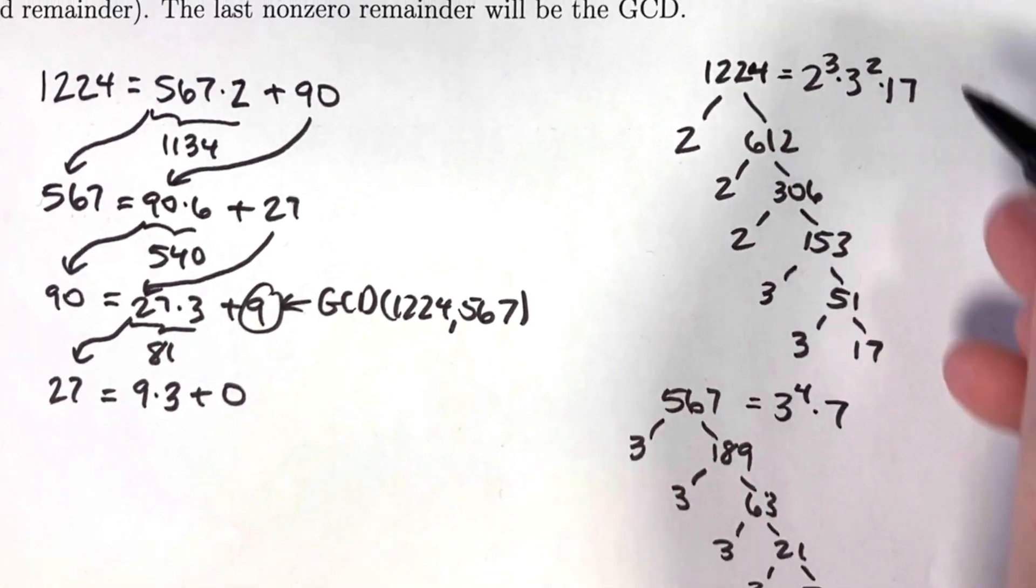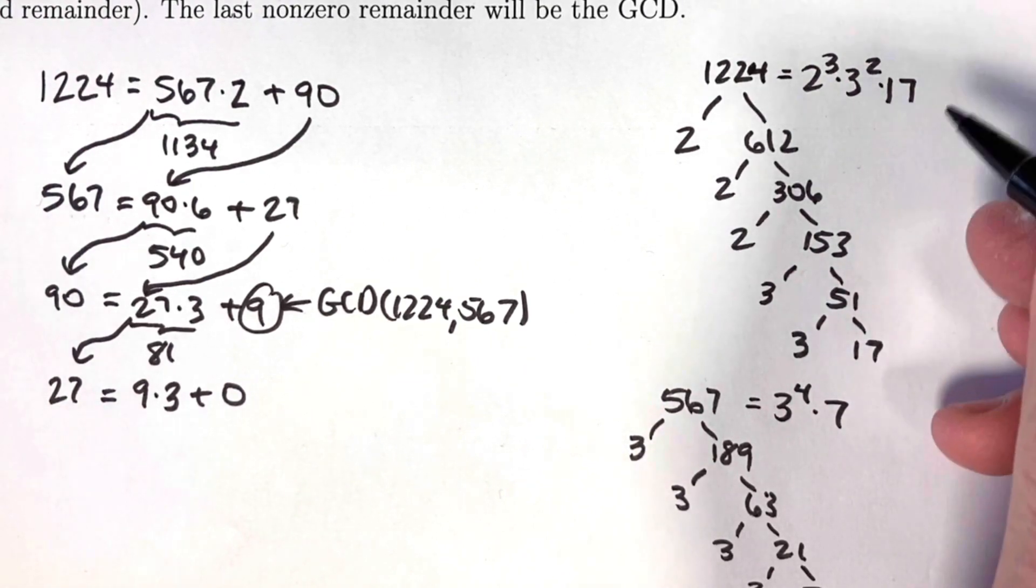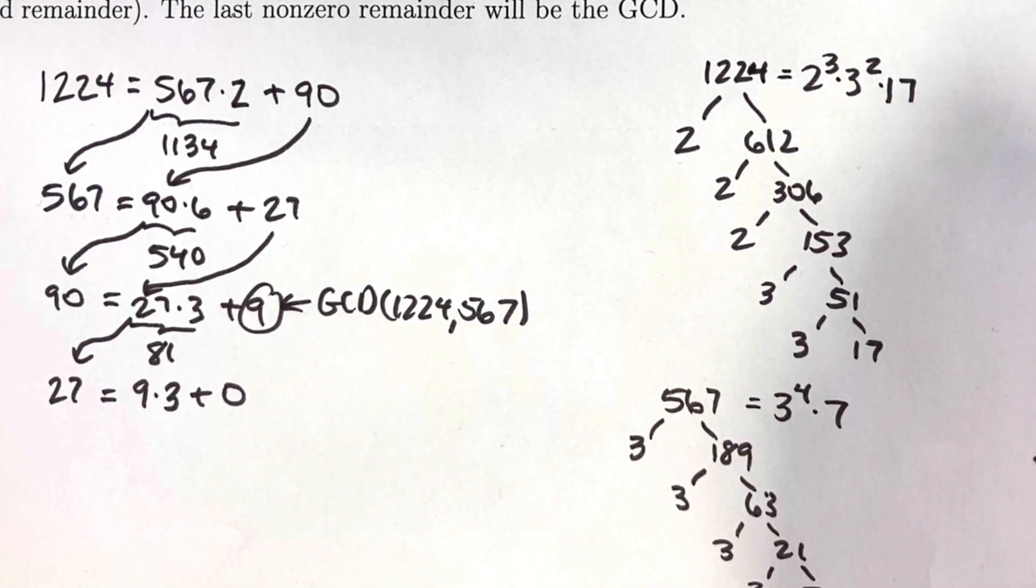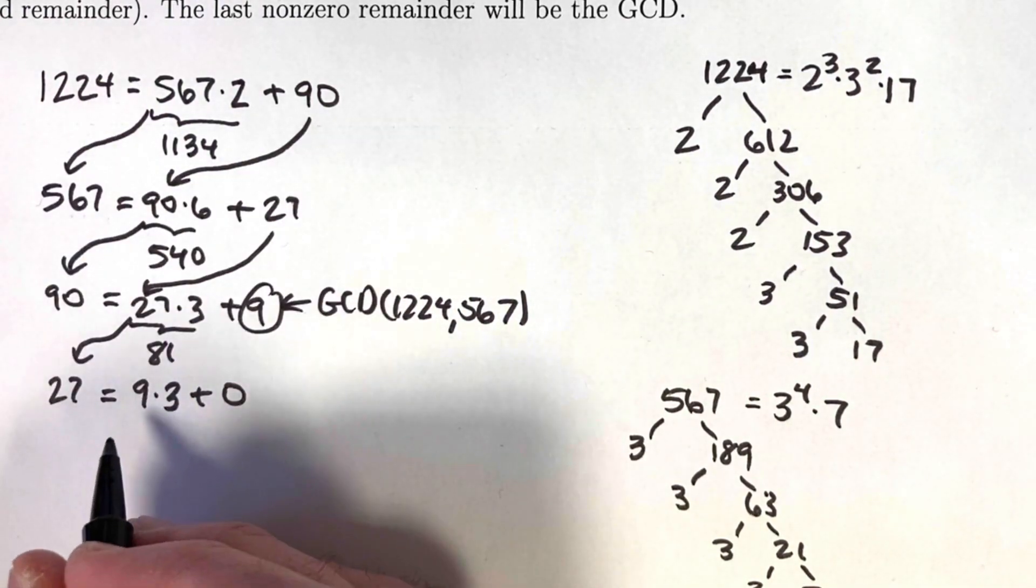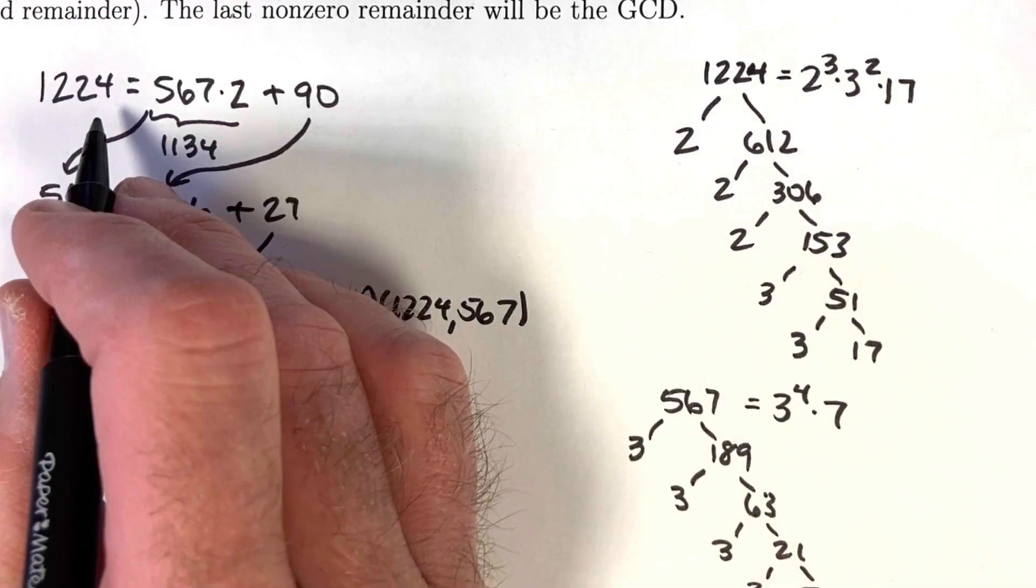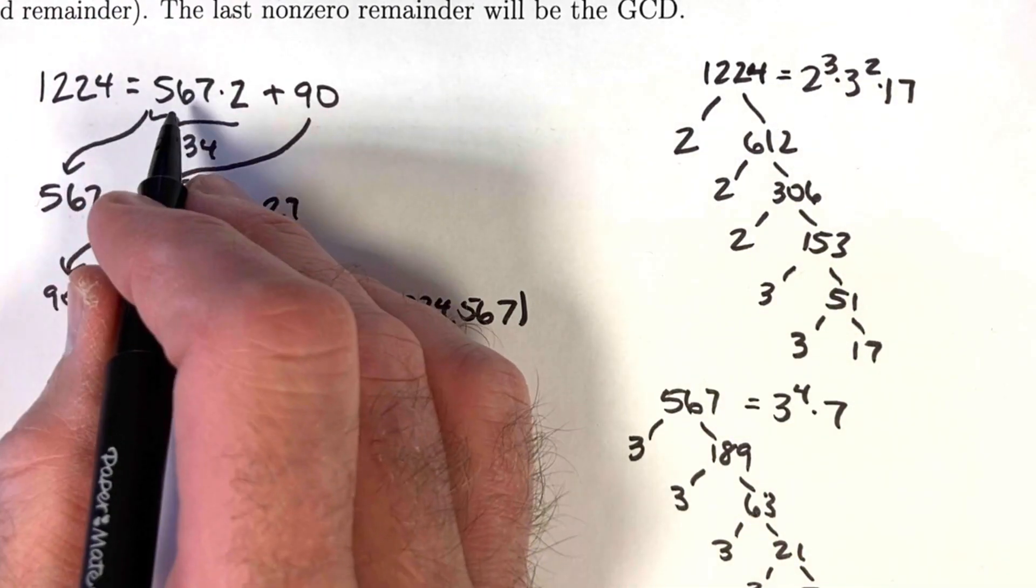What primes do these factorizations have in common? They have two factors of 3 in common. 3 squared is 9. 9 is the GCD. You might wonder, why did the Euclidean algorithm work? Why is 9 the GCD based on this method? First of all, 9 certainly is a divisor or a factor of both 1224 and 567.